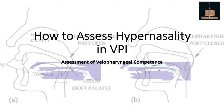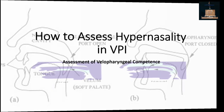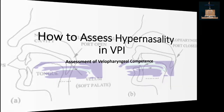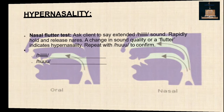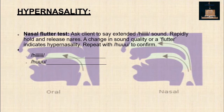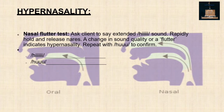How to assess hypernasality in VPI — assessment of velopharyngeal competence. Nasal Flutter Test: ask the client to say an extended high fricative sound rapidly, then hold and release the nares. A change in sound quality or flutter indicates hypernasality. Repeat with another fricative to confirm.